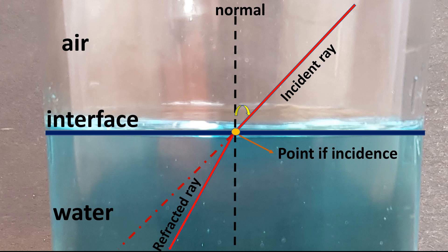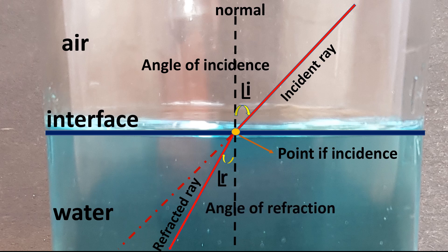The angle between the normal and the incident ray is called the angle of incidence, denoted by angle i. The angle between the normal and the refracted ray is called the angle of refraction, denoted by angle r.